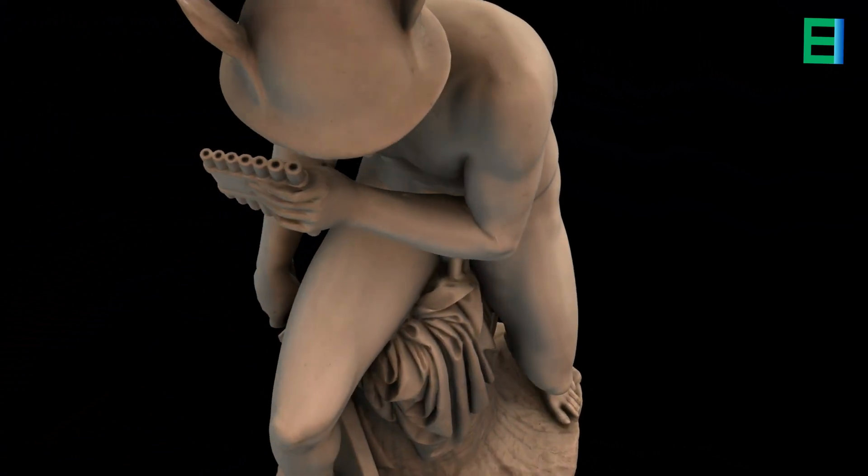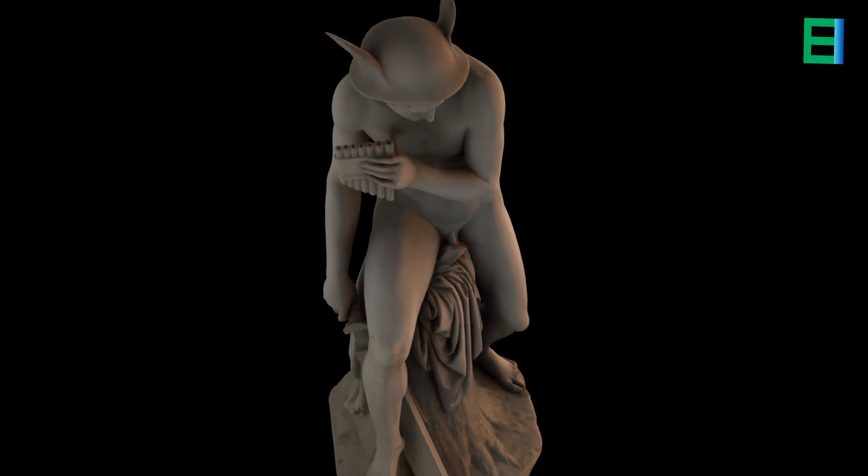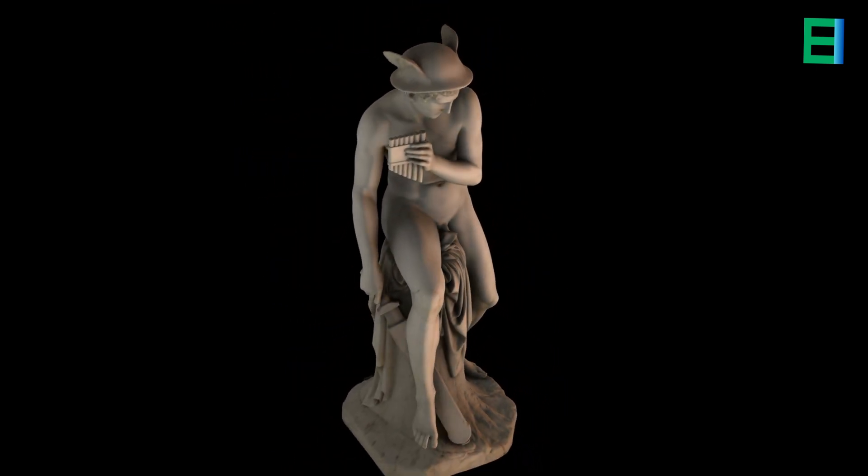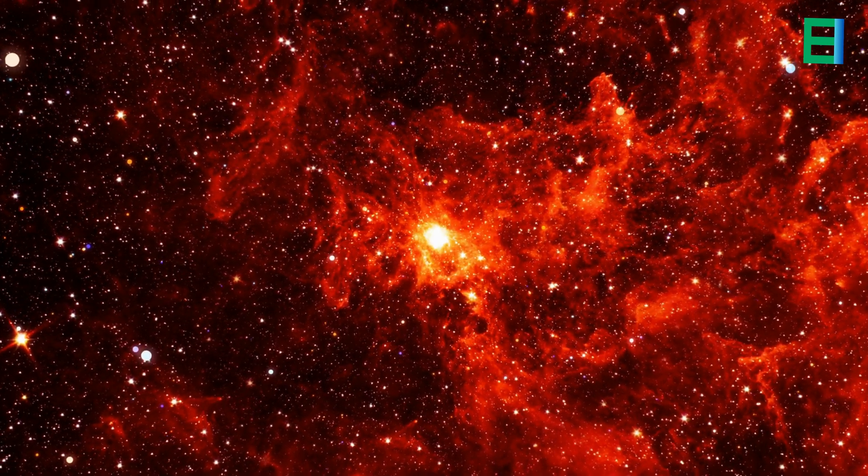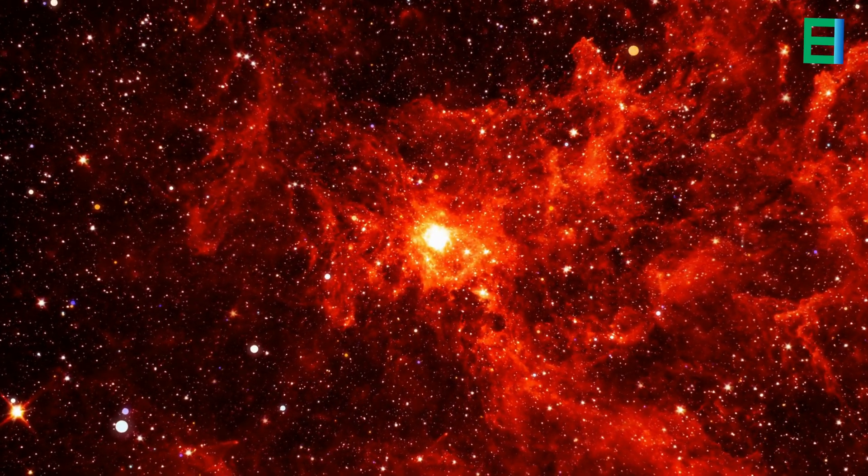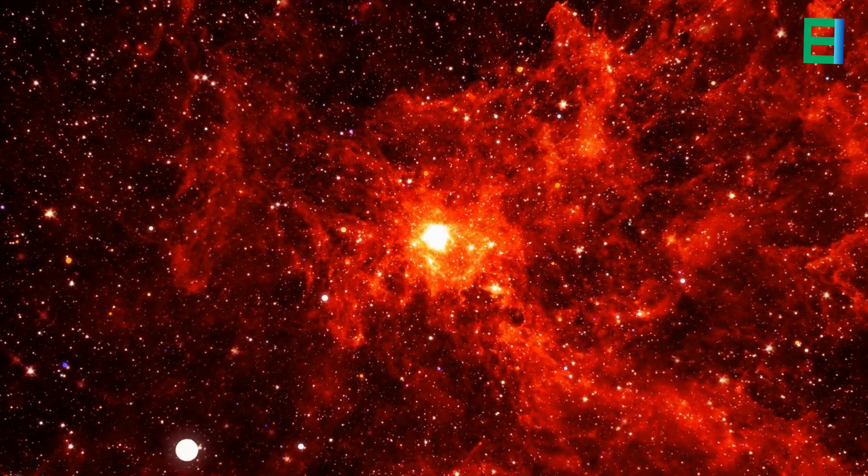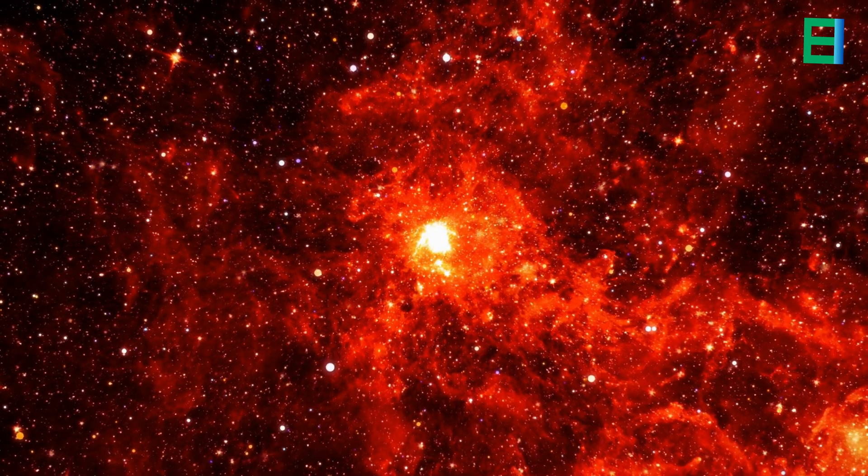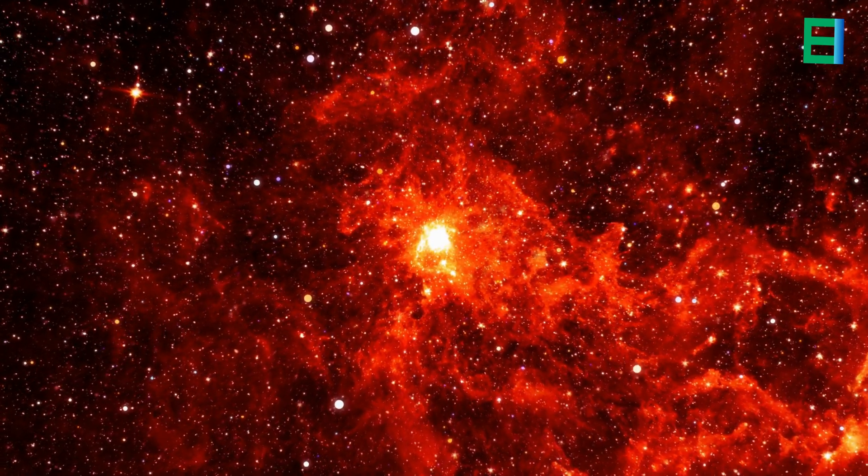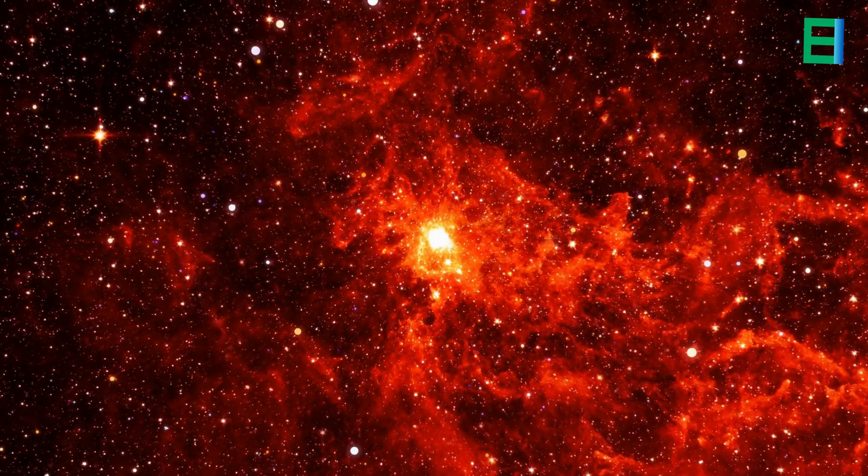This choice reflected the planet's remarkable apparent motion which seemed to rival the speed of its mythological namesake. Approximately 4.5 billion years ago, scientists propose that Mercury's genesis unfolded as gravitational forces drew in swirling clouds of gas and dust, eventually culminating in the birth of this diminutive planet.